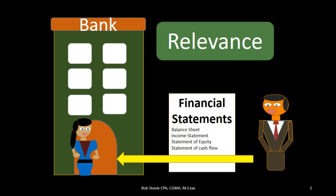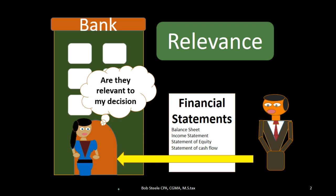We're going to look at an example here in terms of a bank. We have our banker here and we've got our business person here. If the bank is thinking about giving a loan that the business person is asking for, they may ask for financial statements. When we get the financial statements, our banker might be asking about the first objective: relevance. That's the question — are these financial statements relevant to the decision-making process?